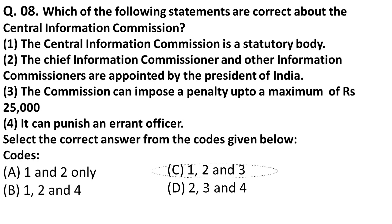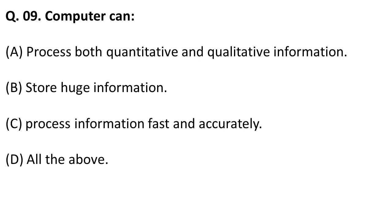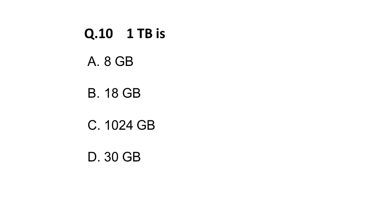The next question asks what a computer can do. Option A — a computer can process both quantitative and qualitative information — is correct. Option B — it can store huge amounts of information — is correct. Option C — it can process information fast and accurately — is also correct. So the answer is all of the above.